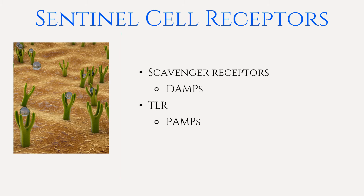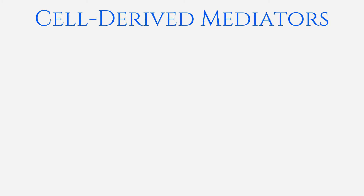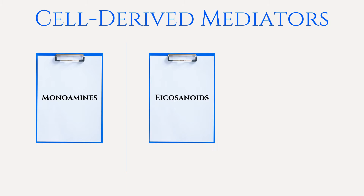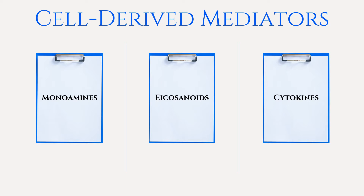Either of these receptors can initiate the release of inflammatory mediators leading to the inflammatory response. We are going to go over three types of cell-derived inflammatory mediators in this video. The first type is monoamines, which histamine falls into. Another type is eicosanoids, which include prostaglandins, thromboxane, and leukotrienes. And another type is cytokines, which includes interleukin-1 and tumor necrosis factor alpha. This is not an exhaustive list, but the ones we will be focusing on in this video.